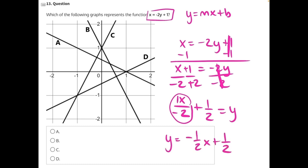So the two things we're looking for, we're looking for a graph or a linear function that has a negative slope, meaning it's going down from left to right, and it passes through the y value 1 half on the y axis.